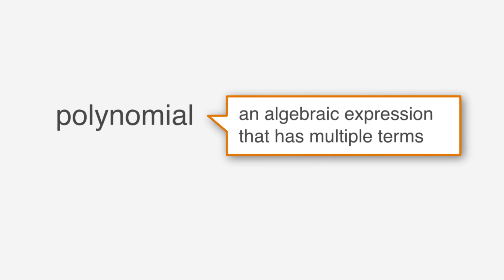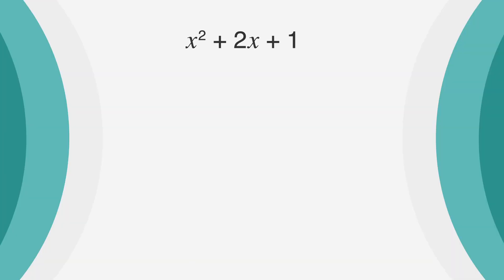The polynomial is an algebraic expression that has multiple terms. What does that mean? Here's an example: x squared plus 2x plus 1. This is an algebraic expression with three terms, aka a polynomial with three terms. And here's a polynomial with four terms, and one with five terms.